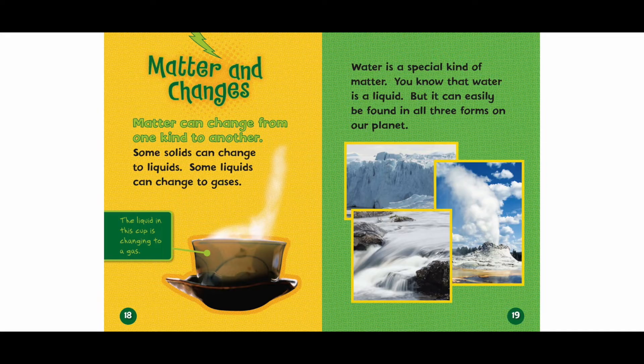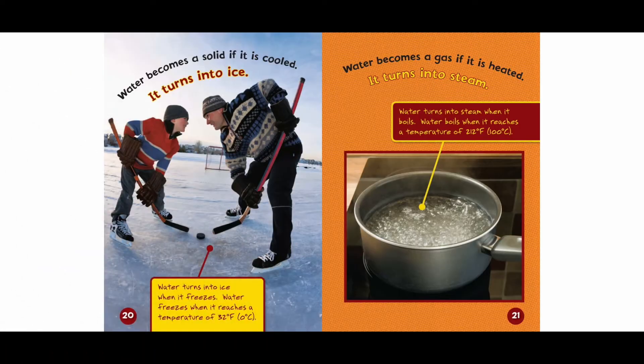Matter and changes. Matter can change from one kind to another. Some solids can change to liquids; some liquids can change to gases. Water is a special kind of matter — it can easily be found in all three forms on our planet. Water becomes a solid if it is cooled; it turns into ice. Water freezes when it reaches a temperature of 32 degrees Fahrenheit or 0 degrees Celsius.